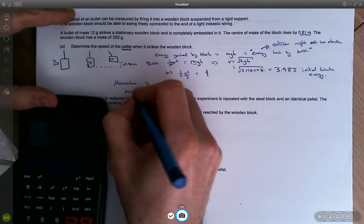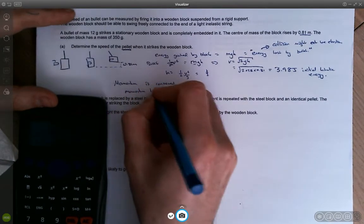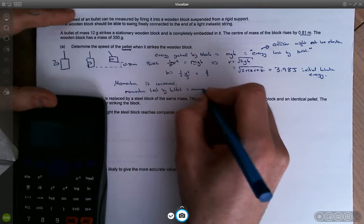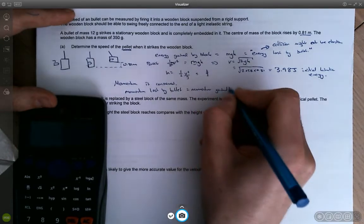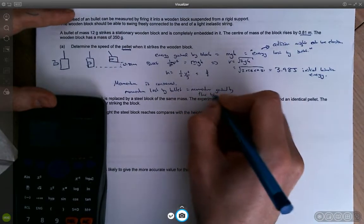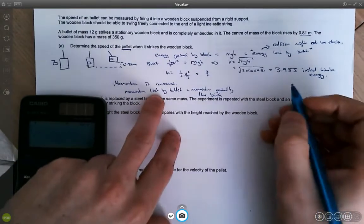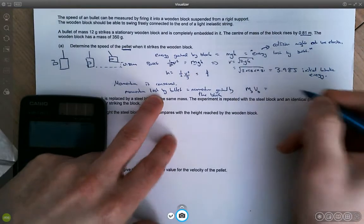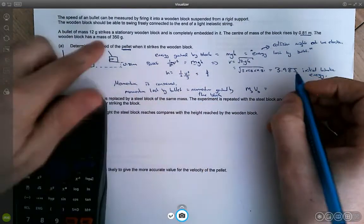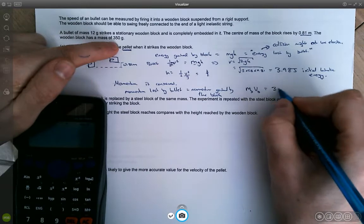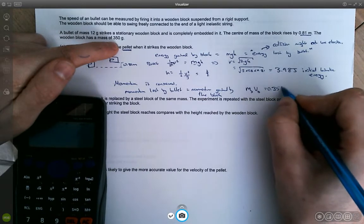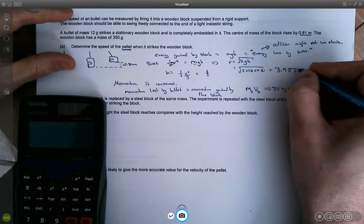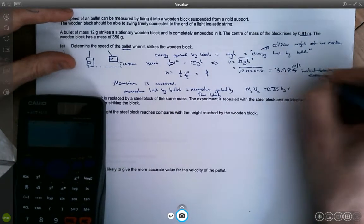Momentum. So we're going to tackle a second part of the problem using momentum conservation. So the momentum lost by the bullet equals the momentum gained by the block. So what momentum is lost by the bullet? Well, it's going to be the mass of the bullet times the velocity of the bullet. And the momentum gained by the block is the mass of the block, which is 0.35 kilograms times by the velocity of the block, which is this.